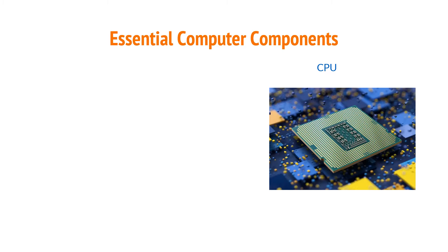The central processing unit, also known as the CPU, is the brain of a computer. It handles all instructions that are received from hardware and software that is running on the computer.